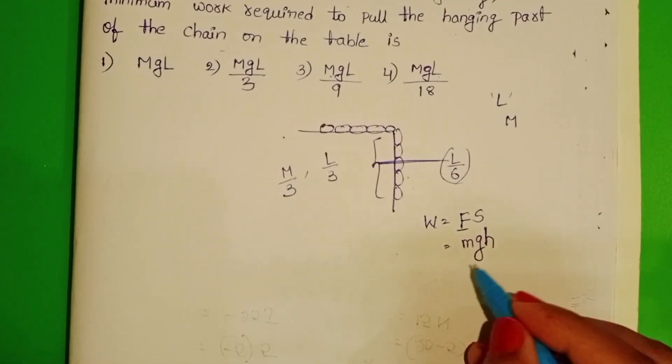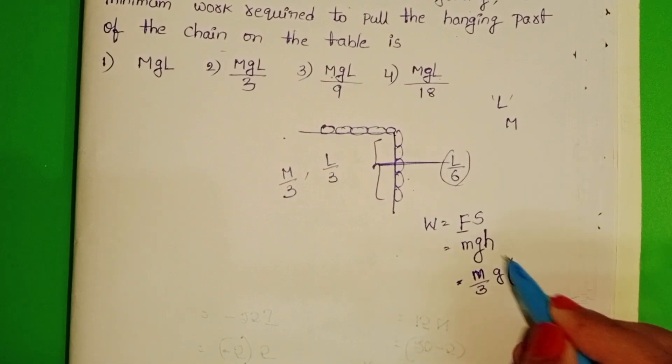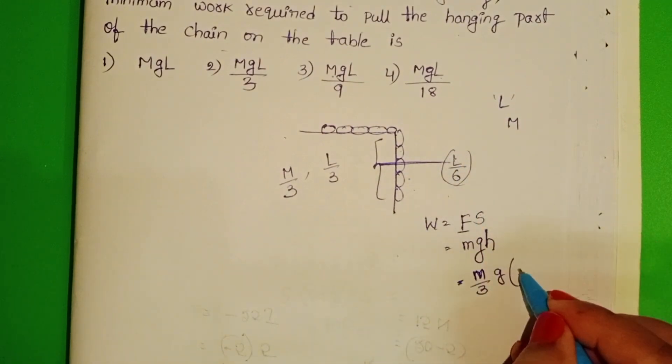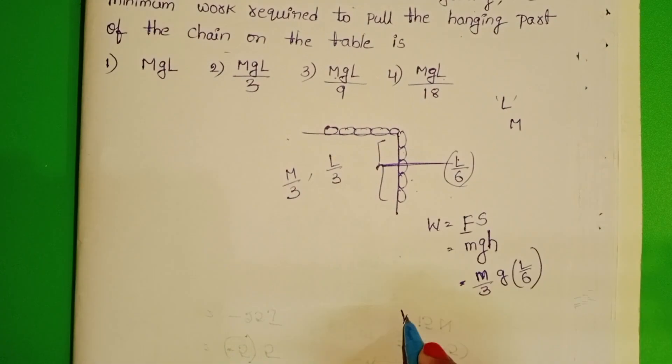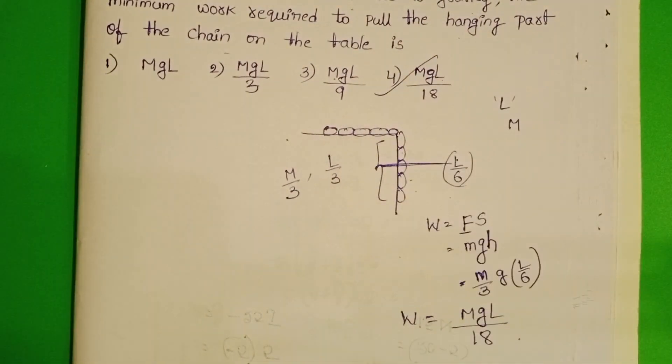Mgh. Mass is M by 3, acceleration due to gravity g, in place of height take L by 6. Work done equals MgL by 18. Fourth option is correct.